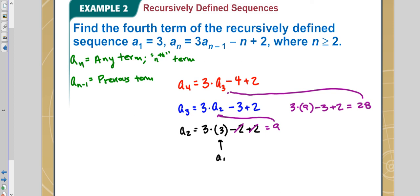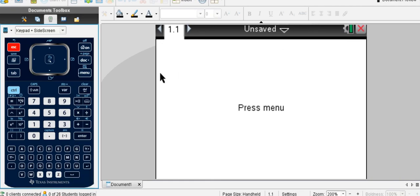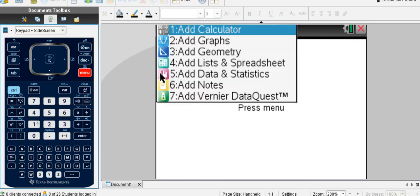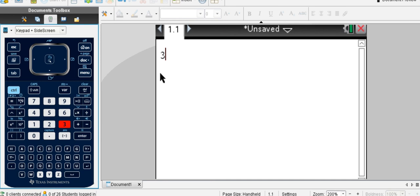And so we would have 3 times 28, which that I believe is 84. Let's check that real quick. I believe that's 84, 3 times 28, yep, 84.